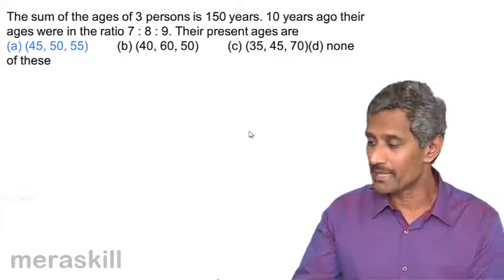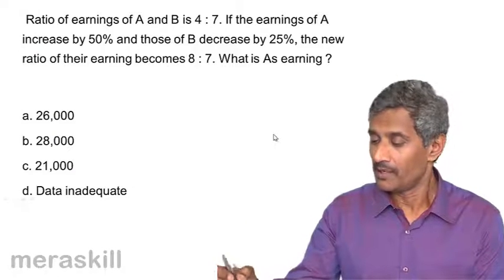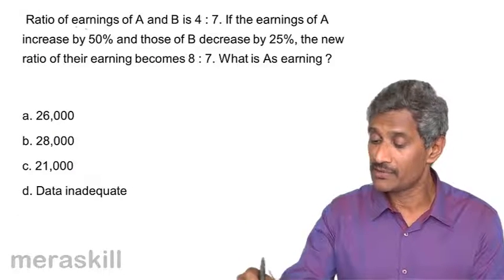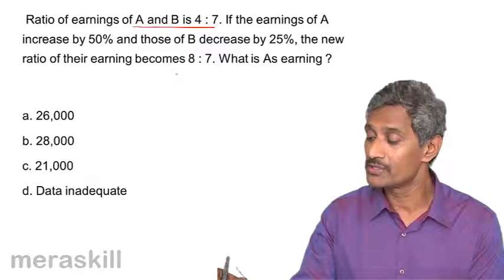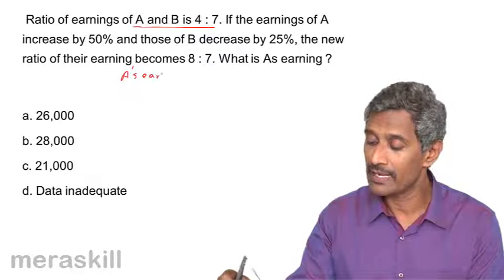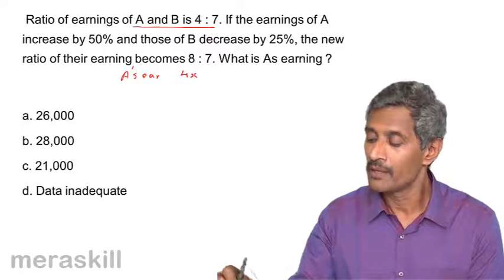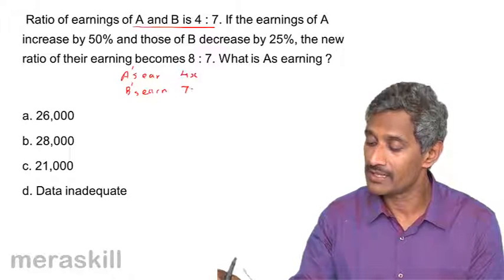Let's take up one more example in applications. Okay, now here we have a case. Ratio of earnings of A and B is 4 is to 7. So we can take A's earnings as 4x and B's earnings as 7x.